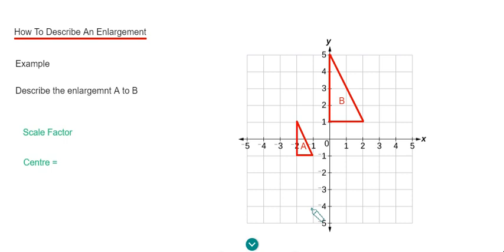Let's go with the scale factor first. We just need to pick two corresponding sides. Let's go with the heights of triangles B and A. The height of triangle B is 1, 2, 3, 4 centimetres.